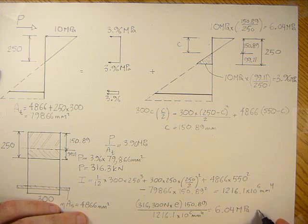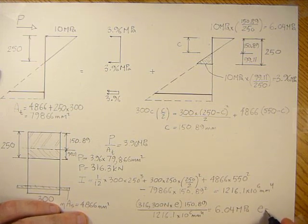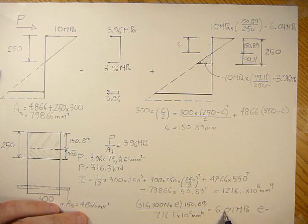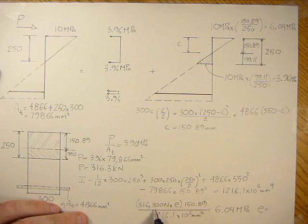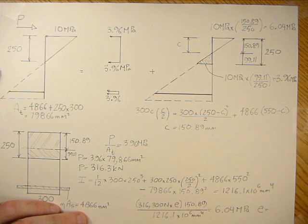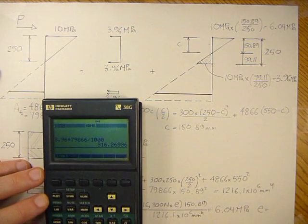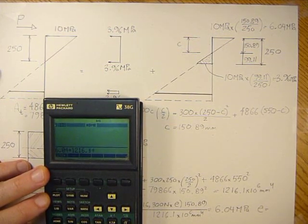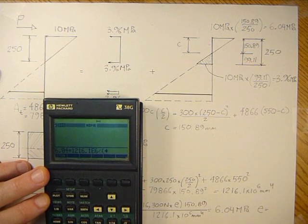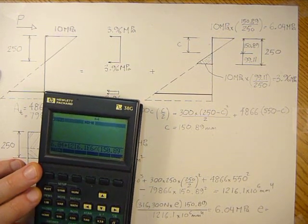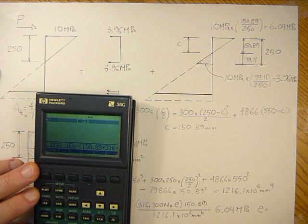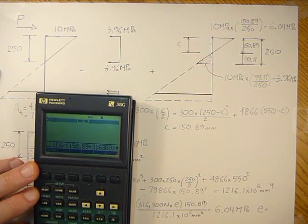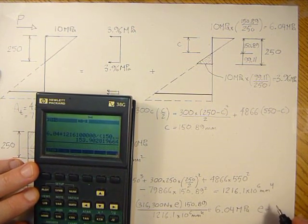We can now solve for e. We take 1,216 times 6.04, divide it by 150.89, and divide all that by 316,300. So 6.04 times 1,216.1e6 divided by 150.89 times 316,300 gives me an e of 153.9.